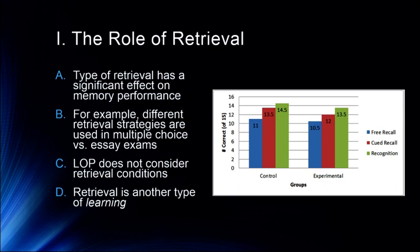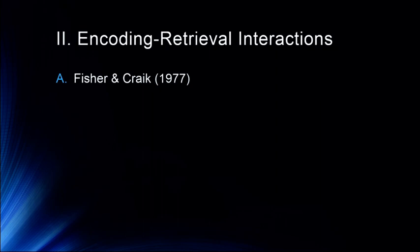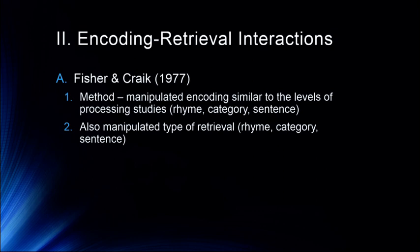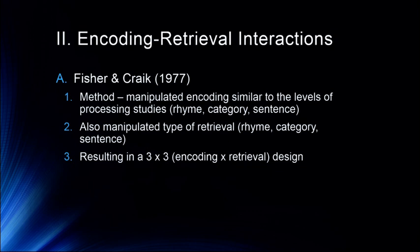So that gets us into talking about encoding and retrieval interactions. This is a very famous study conducted by Fisher and Crake in the late 1970s. They manipulated type of encoding — similar to levels of processing studies — does it rhyme with? Does it fit into a category? Does it fit into this sentence? What's different here is they also manipulated type of retrieval, giving a retrieval cue: does it rhyme with? Does it belong to the category? Does it fit into this sentence?